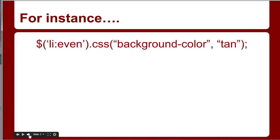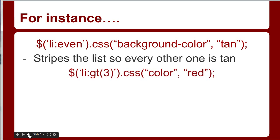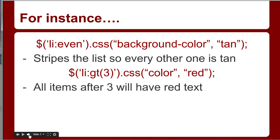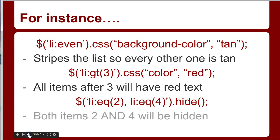So `li:even .css('background-color', 'tan')` is going to stripe the list so that every other one has a tan background color. `li:gt(3).css` is going to address all list items after item number 3 and make their text color red. `li:eq(2), li:eq(4) .hide()` is going to hide both items 2 and 4 of my list, using a comma to separate the two different expressions.